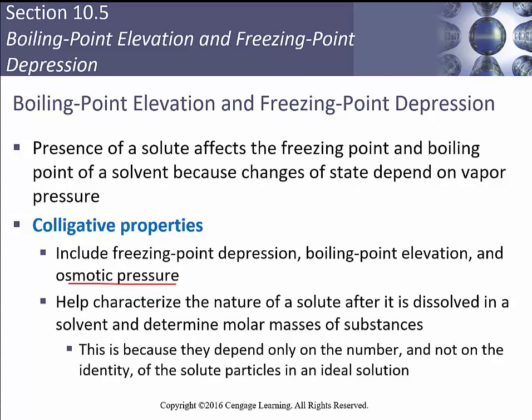We're going to help characterize the nature of a solute after it is dissolved in a solvent and determine the molar masses of substances. If we know how many grams went in, we can figure out how many moles based on our change in freezing point or boiling point. If we've got moles and mass, we've got a molar mass. This is because colligative properties depend only on the number and not the identity of the solute particles in an ideal solution.